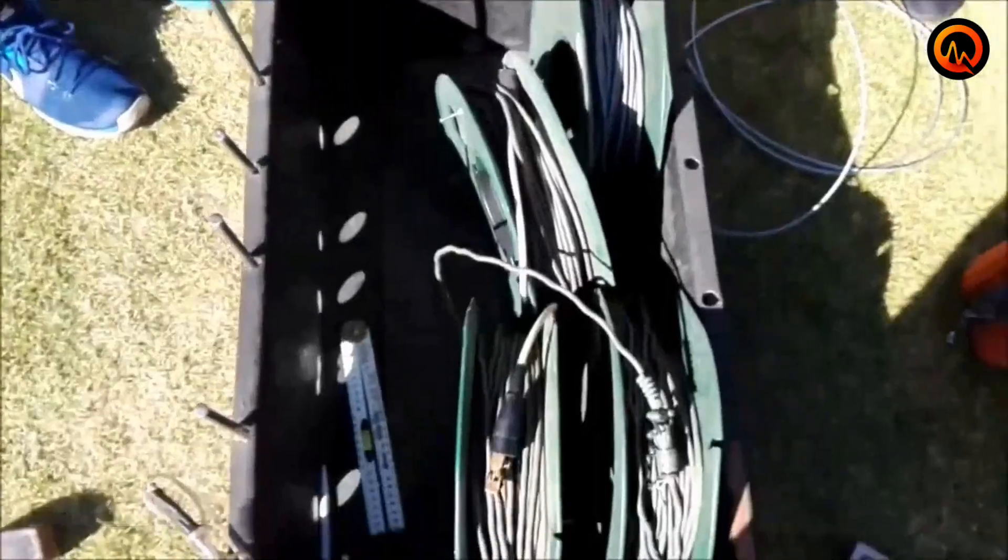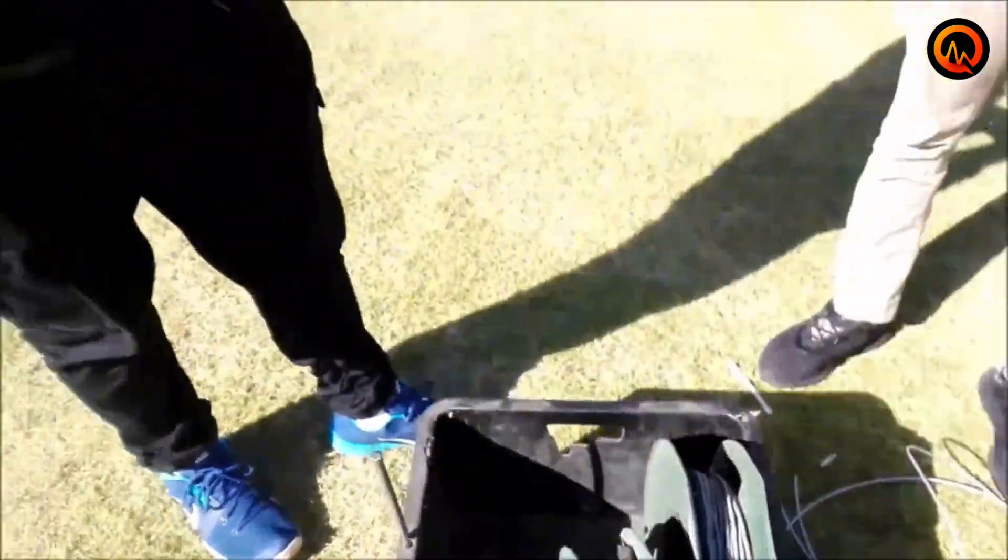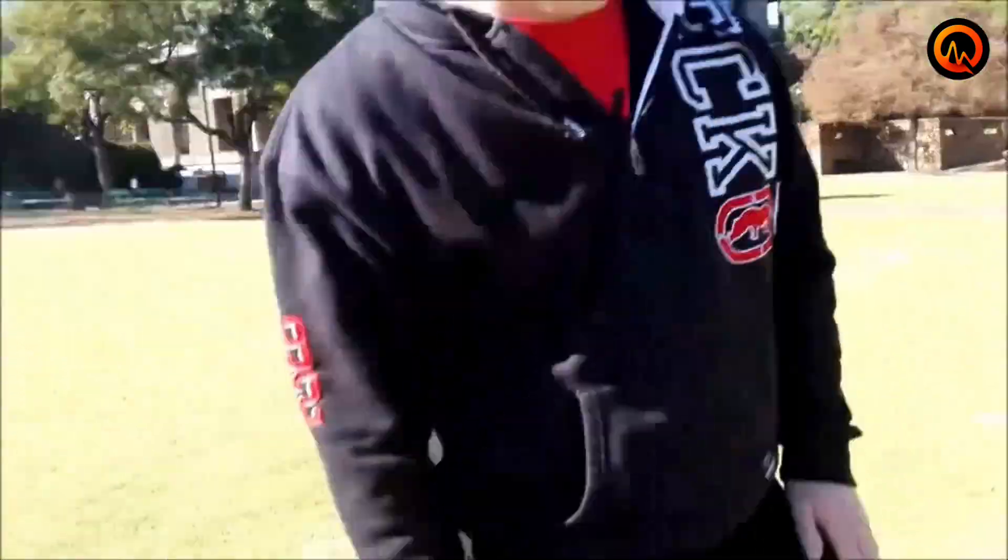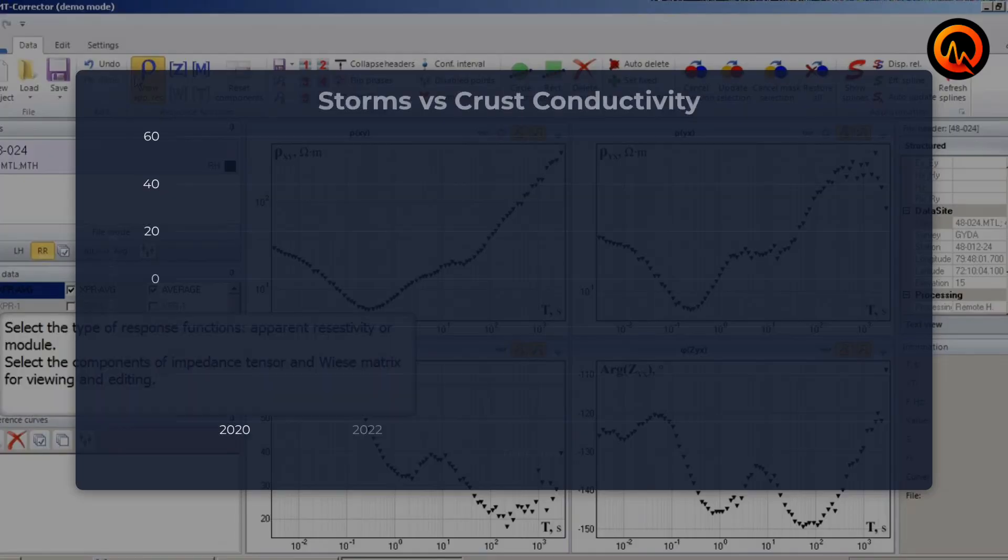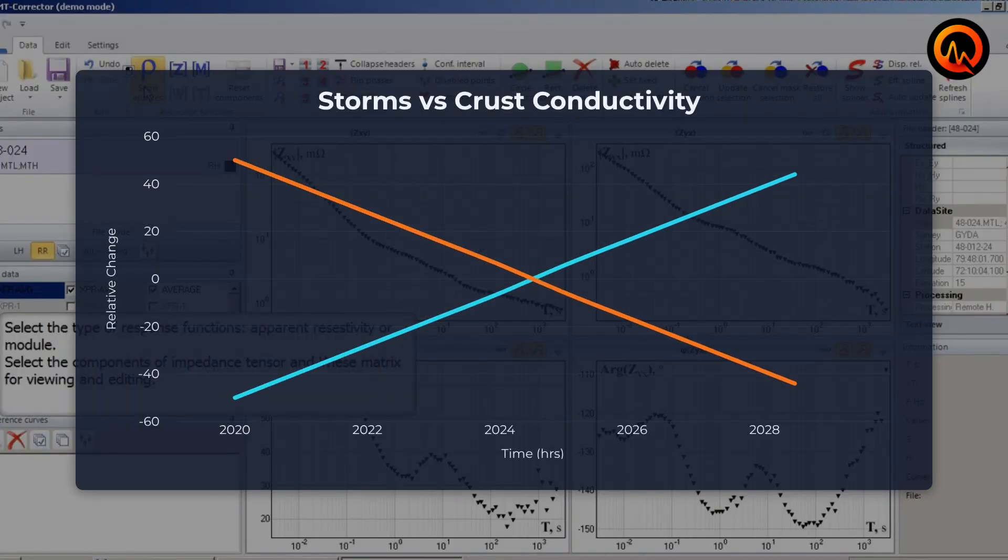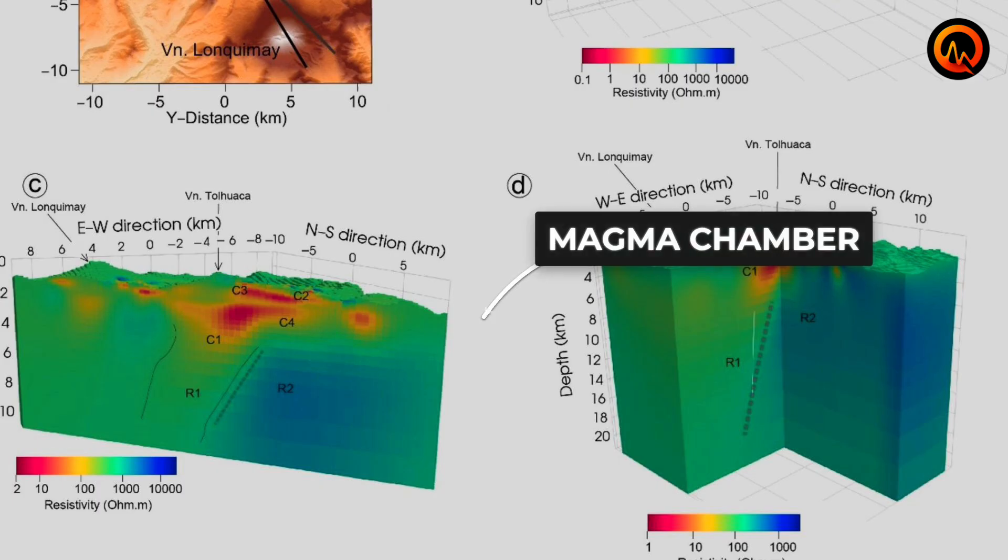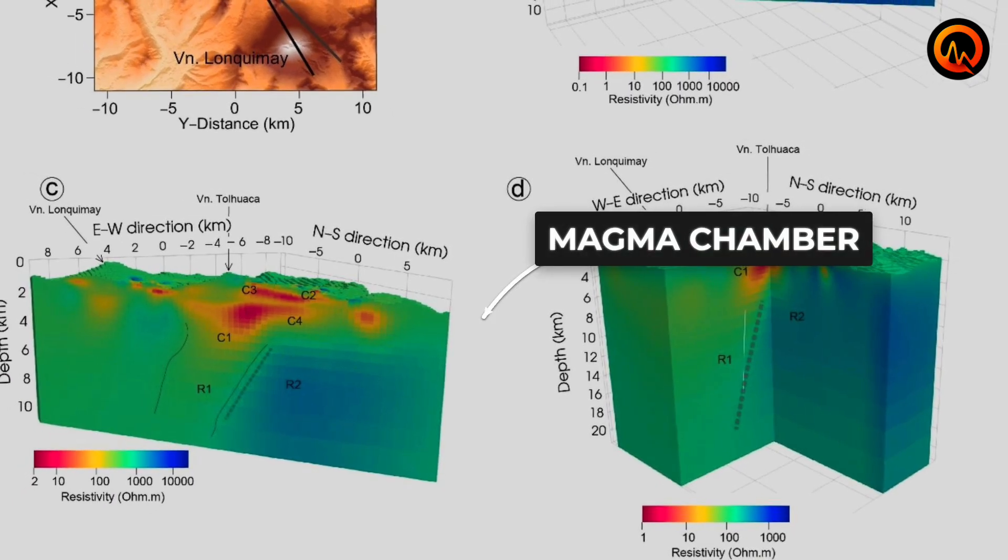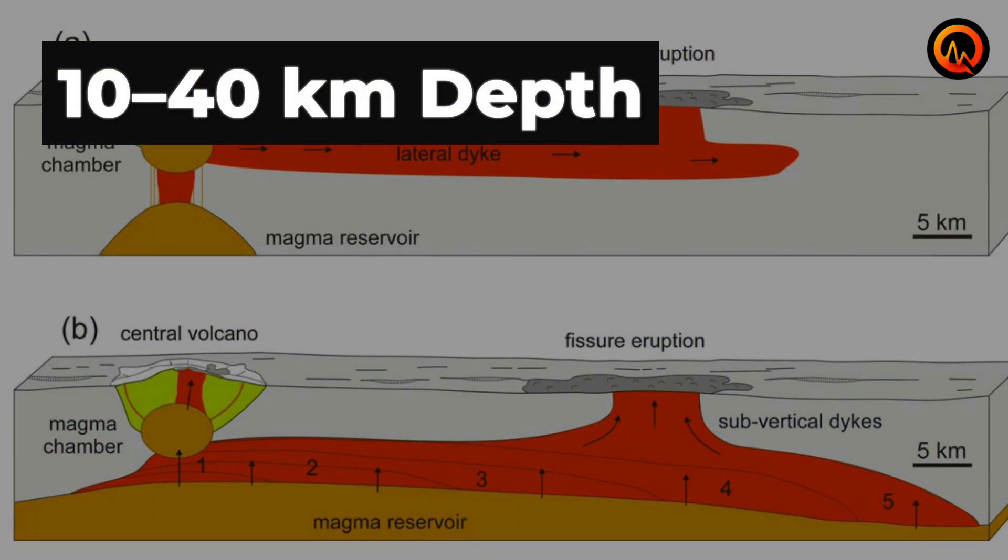Recent studies using magnetotelluric imaging, a technique that maps underground electrical conductivity, have detected changes in crustal conductivity patterns following major geomagnetic storms. These changes occur at depths where magma chambers typically form, between 10 and 40 kilometers below the surface.